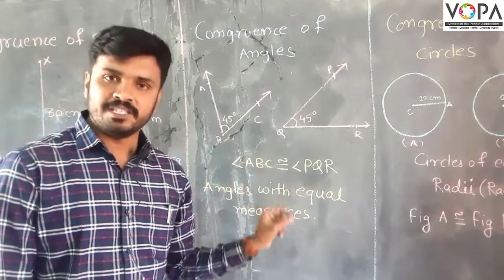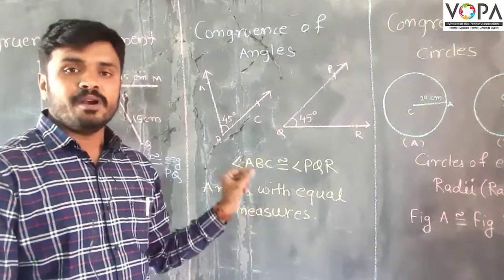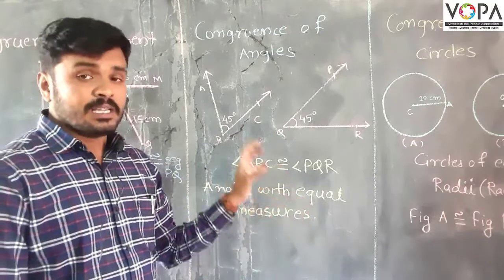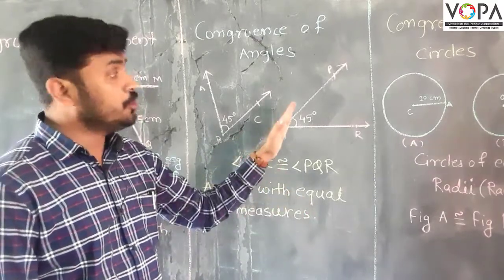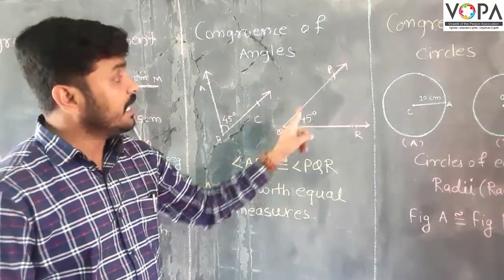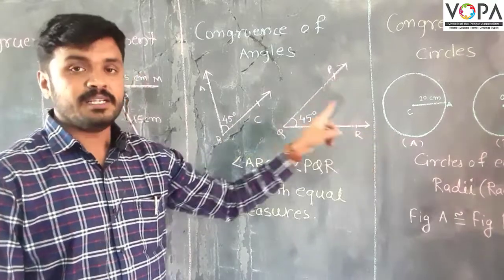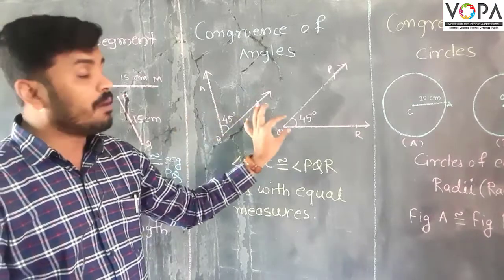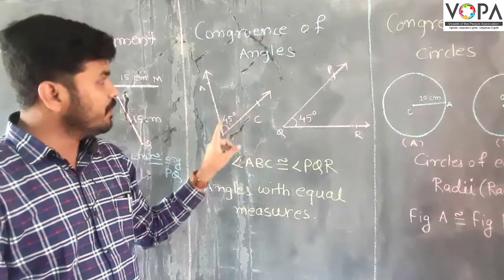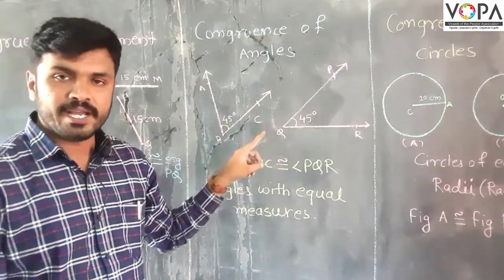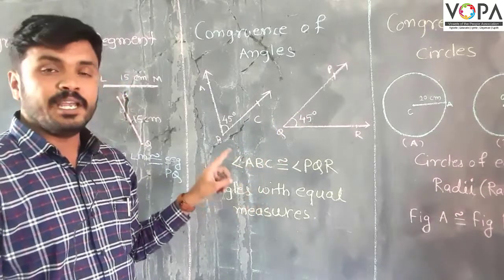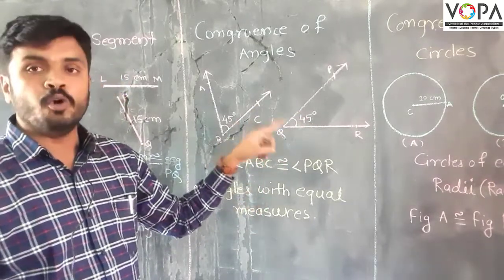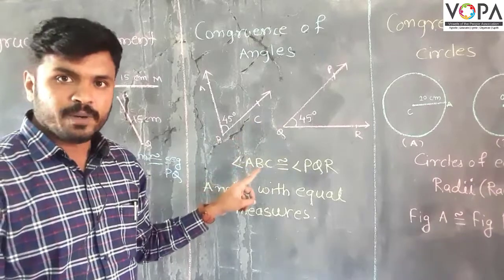With these examples we can say that the angles which are equal in measure are congruent with each other. There is no other issue about the lengths of its sides. The angles with equal measures are congruent with each other.